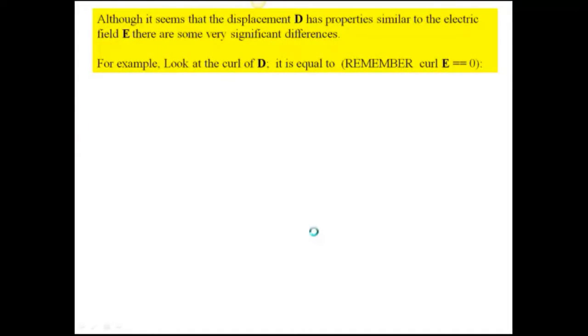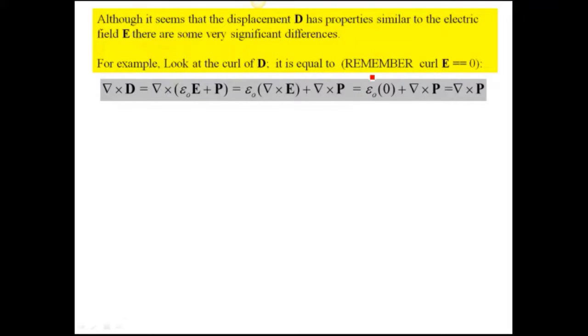Well, we can say that even though it looks like the displacement has properties that are similar to the electric field, there are some important differences. For example, look at the curl of D. And I want you to remember that the curl of E is equal to zero. Here, if we expand D and then take the curl of each term, we know that the curl of E is equal to zero. So we put that in. Then what we have is the curl of P. We cannot say is always zero. Sometimes it might be. For example, if P equals zero, that'll be the case. But when, in general, we cannot set it equal to zero, then we would have to conclude that the curl of D is not always zero, contrary to the E field.